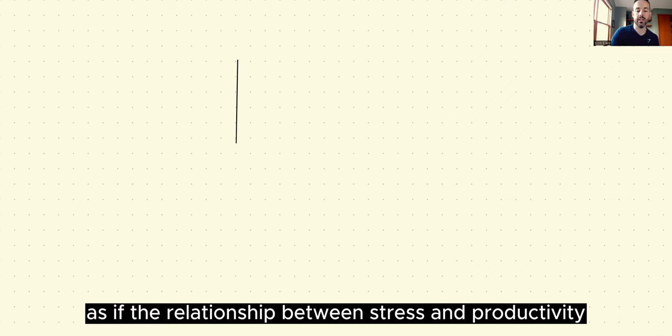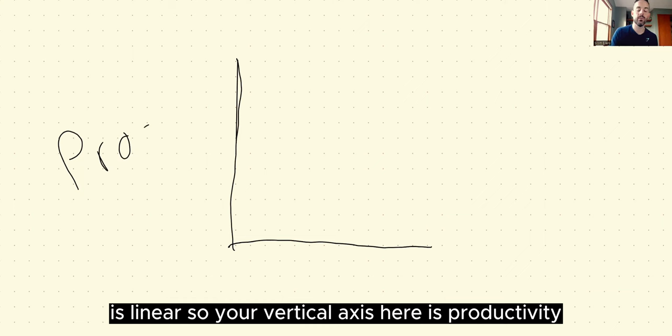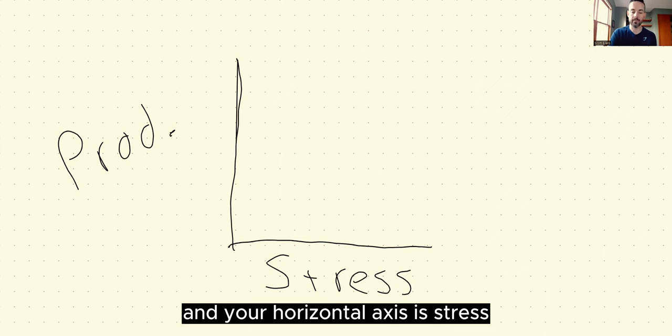Most people treat themselves or treat other people as if the relationship between stress and productivity is linear. So your vertical axis here is productivity and your horizontal axis is stress. Most of us act like this is the relationship between these two variables.